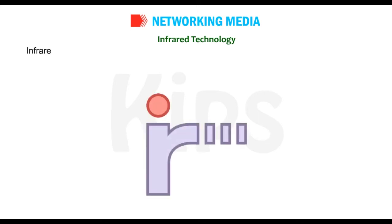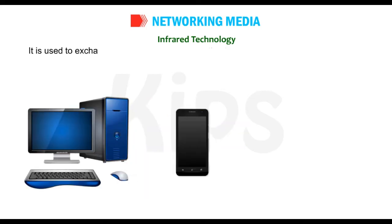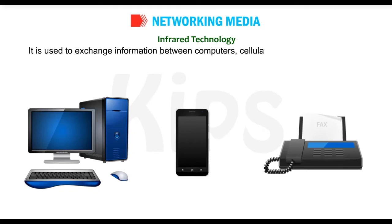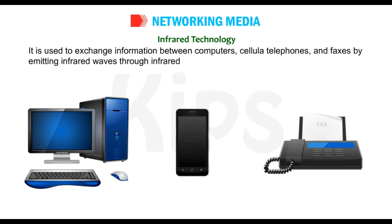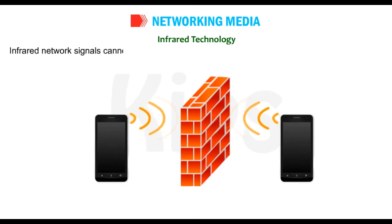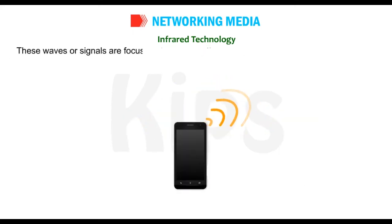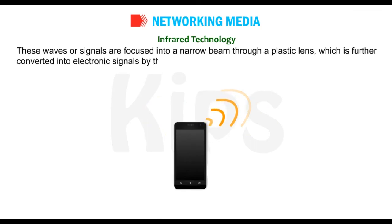Infrared technology: infrared technology is a short-range communication technology that covers approximately 5 meters of distance. It is used to exchange information between computers, cellular telephones and faxes by emitting infrared waves through infrared LEDs. Infrared communication takes place between two devices at a time. Infrared network signals cannot penetrate walls or other obstructions and work only in a direct line of sight. These waves or signals are focused into a narrow beam through a plastic lens, which is further converted into electronic signals by the receiver.